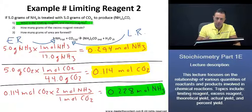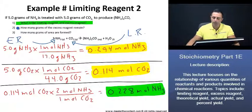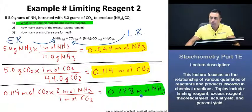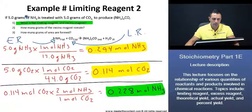Now that we're done with number one, let's continue with number two: how many grams of the excess reagent remain? To find the grams of the excess reagent — which is ammonia — we can take the 0.228 moles of ammonia being consumed, use its molar mass to convert to grams, then subtract that from the initial 5 grams to find the amount of ammonia remaining.